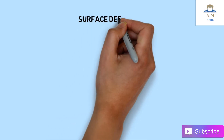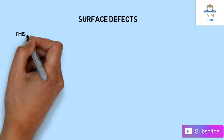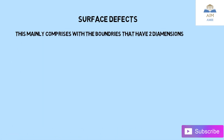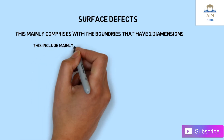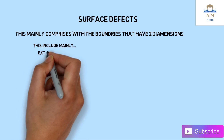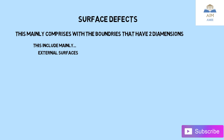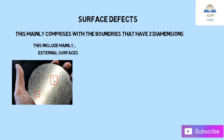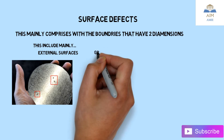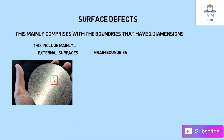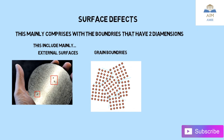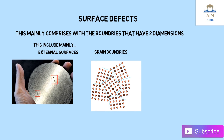Next are surface defects, which mainly comprise boundaries that have two dimensions. This includes external surfaces — in this image you can see defects on the surface of the plate. The second type is grain boundaries; in perfect crystals, grain boundaries should be linear, but in this image you can see distorted grain boundaries.